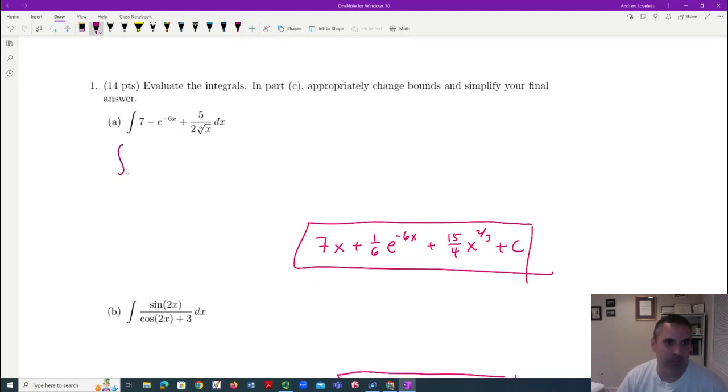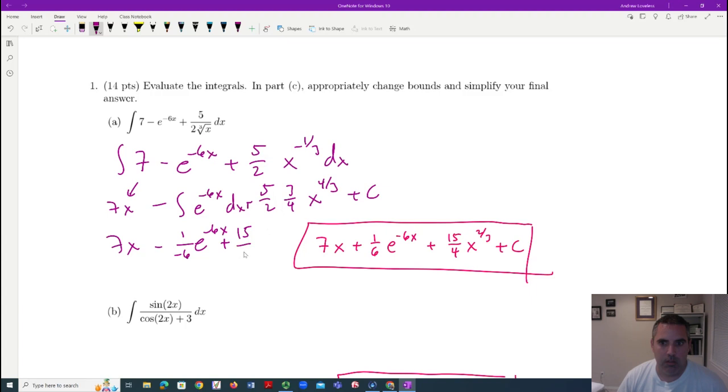This is about simplifying and integrating. If I was a student, I would immediately simplify. I would rewrite and say, oh, there's a five halves, there's an X to the negative one third DX. I know how to integrate this. That's seven X. I know how to integrate this. It's five halves X to the four thirds and there would have to be a three fourths in front of it. There'd be a plus C and I might say, but I'm a little stuck on this one.